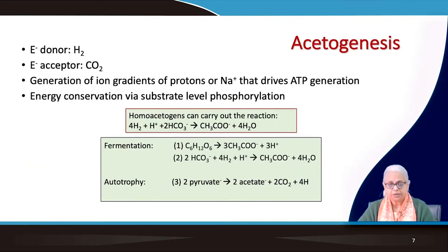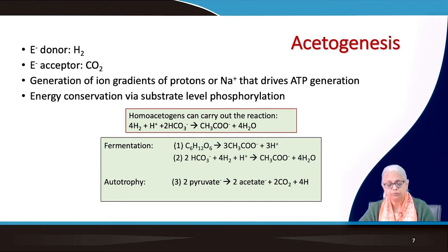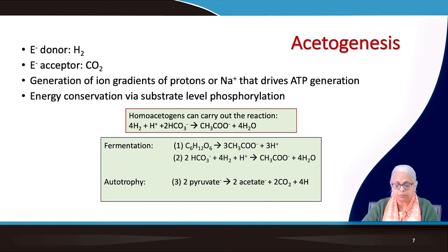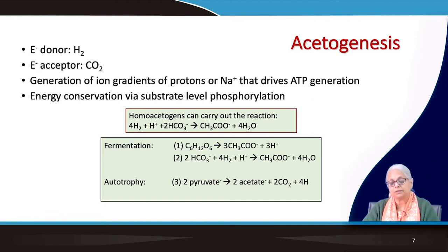The electron donor is hydrogen and the electron acceptor is CO₂. The generation of ion gradients of protons or sodium that drive ATP generation is the principle behind this process. Energy is conserved via substrate level phosphorylation. Homoacetogenic bacteria utilize hydrogen along with protons and bicarbonates to produce acetate and water. You can have fermentative bacteria and autotrophic bacteria, with pyruvate being converted to acetate and CO₂.